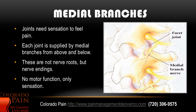The medial branches — this is where they are. This is a nerve root coming out from the spine. You see these little nerve endings that come off here? That's called a medial branch, and that actually supplies sensation to the facet joints. They don't actually do any motor function, these medial branch nerve endings — they're solely sensory. There's one coming from below here and actually another one coming down from above. See how it's coming down? And this one's coming up — those are the medial branch supply to the joint.